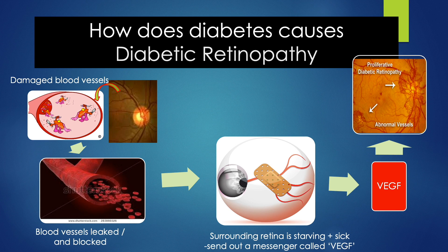Once the blood vessel wall is damaged, there will be leakages of the vascular content and blockage of the vessel. The retina will be starved of oxygen and become very sick. The sick retinal tissue will be crying for help — they will send out a messenger called VEGF, which will stimulate the development of abnormal vessels that easily rupture and bleed.